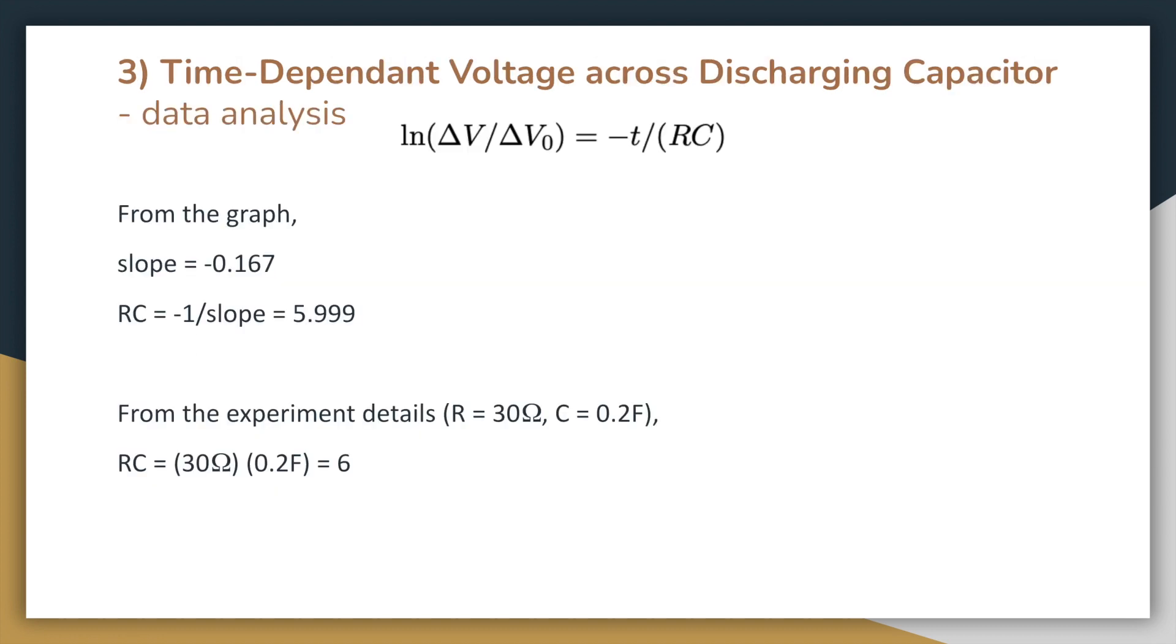Applying this formula, we get a slope of negative 0.167. The RC value is the negative of 1 over the slope, so the RC value is calculated to be 5.999. Similarly, if we calculate RC by simply multiplying R and C, we also get 6, a value reasonably close enough to 5.999 for us to conclude that the experiment was successful and produced reasonable results.